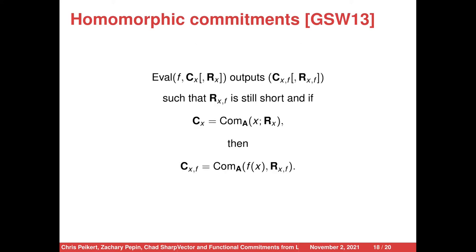Given these homomorphisms, we construct the algorithm eval, which takes a function f, a commitment C_x, and optionally randomness R_x, and outputs a new commitment C_{x,f}. If randomness was provided, it outputs new randomness R_{x,f} such that R_{x,f} is still short. If C_x is a commitment to x under randomness R_x, then C_{x,f} is a commitment to f(x) under R_{x,f}. Concretely, you can imagine the function family being Boolean functions.